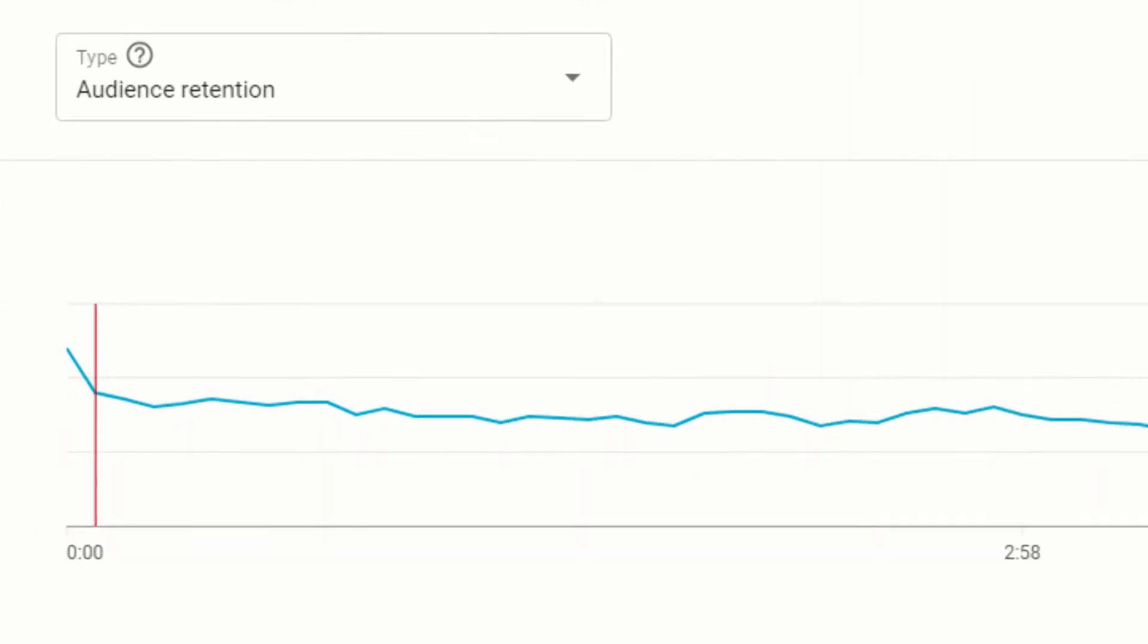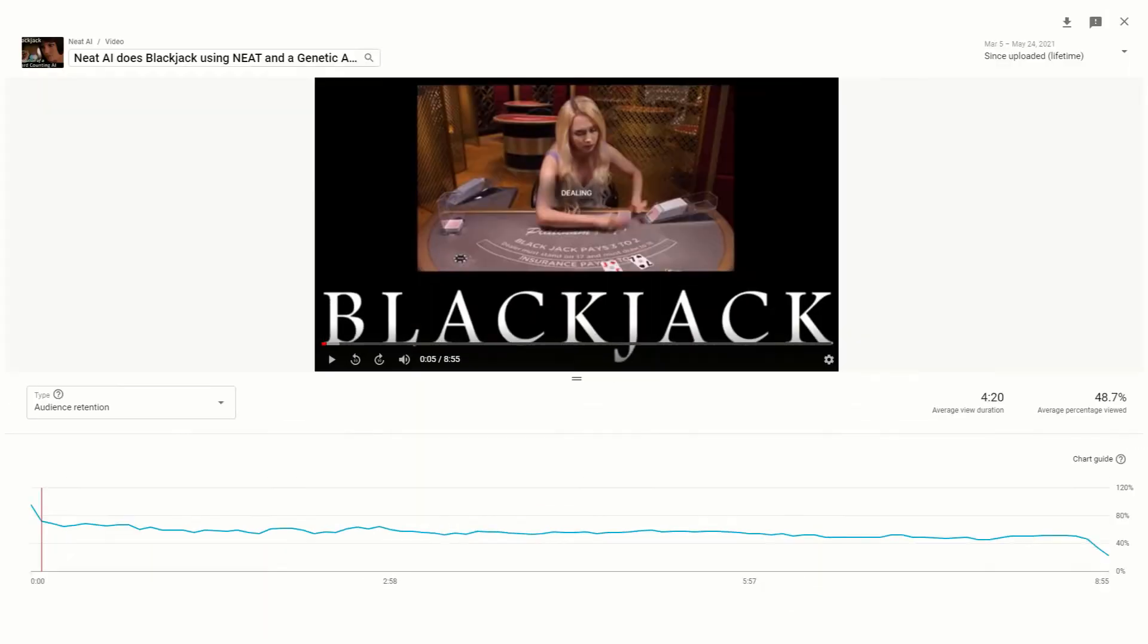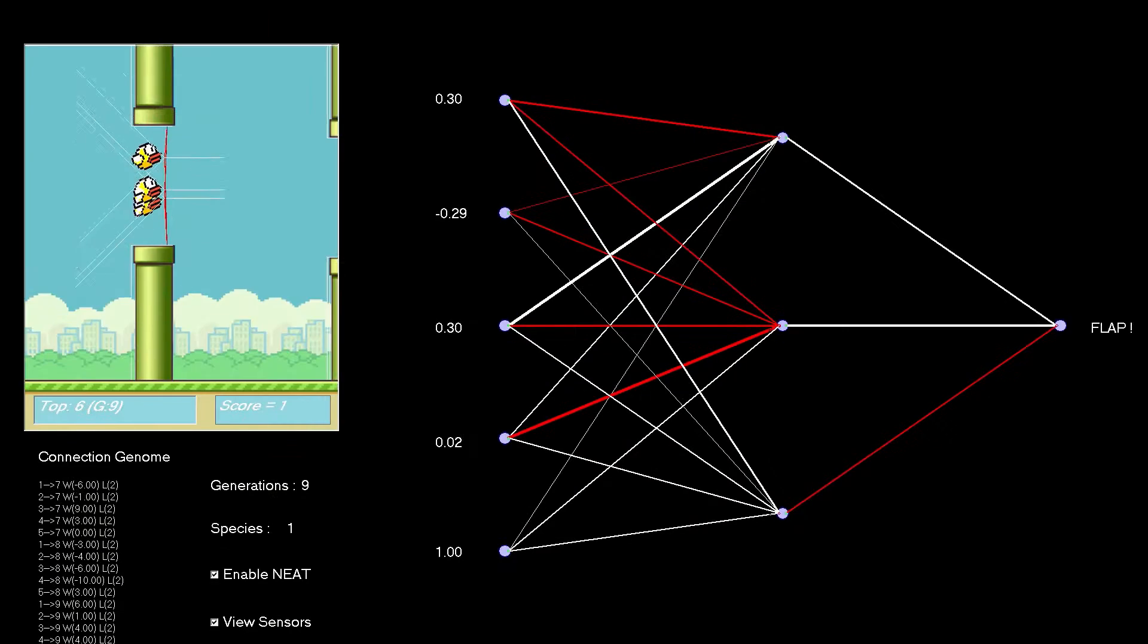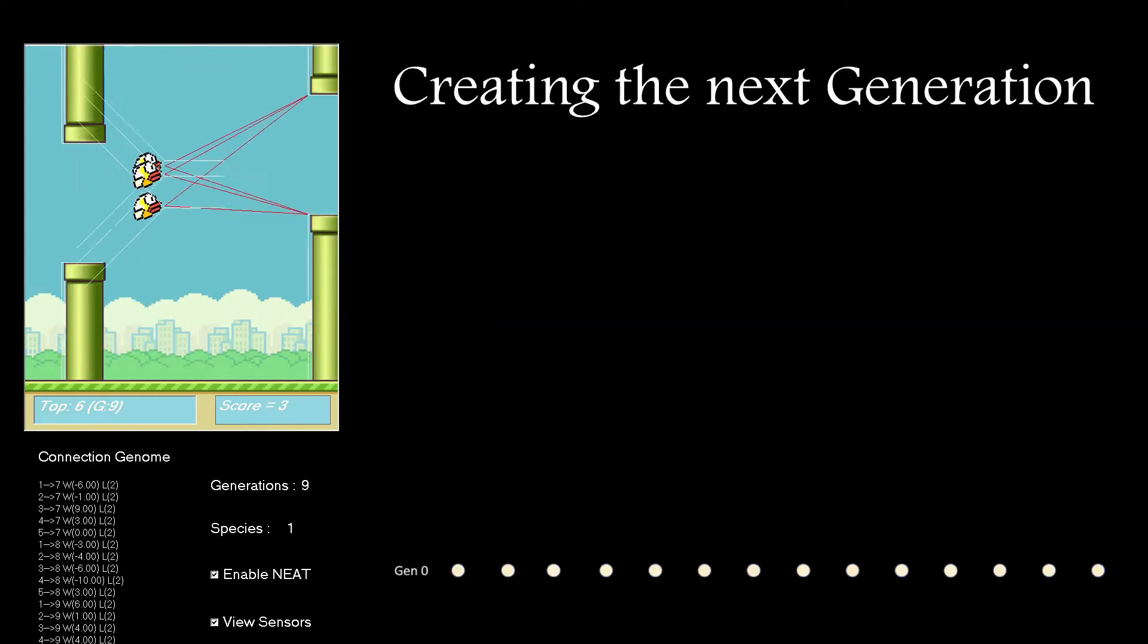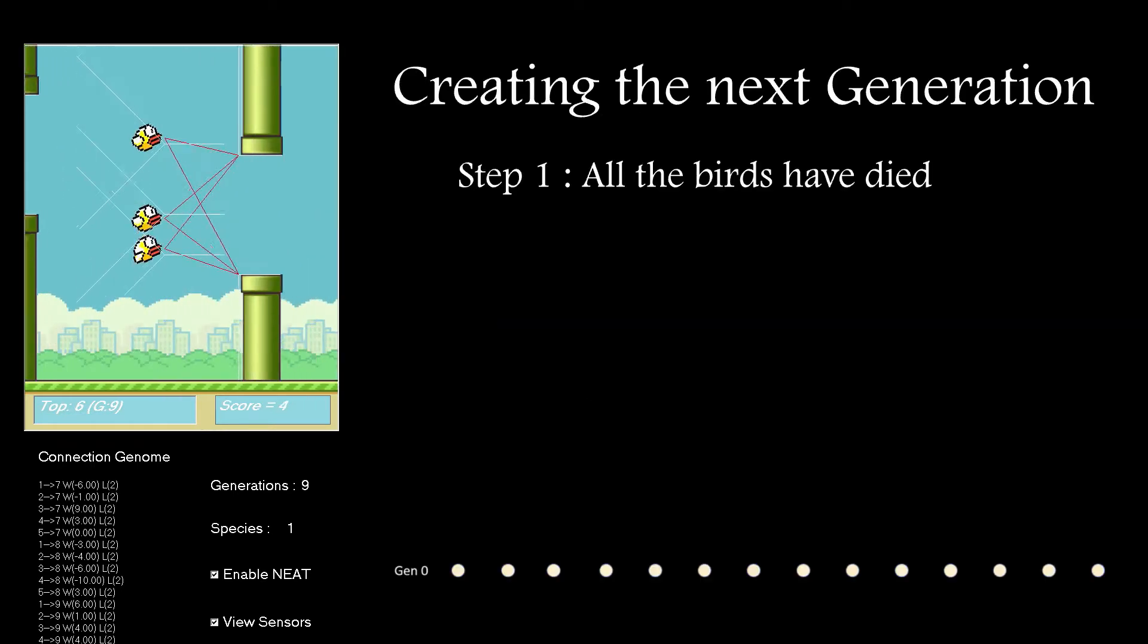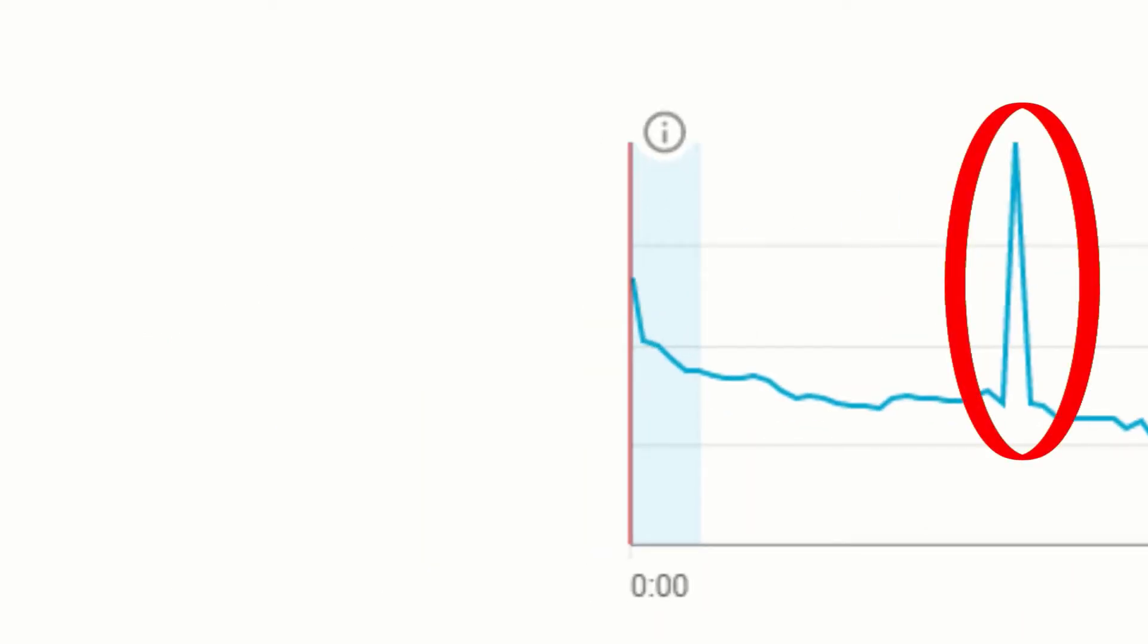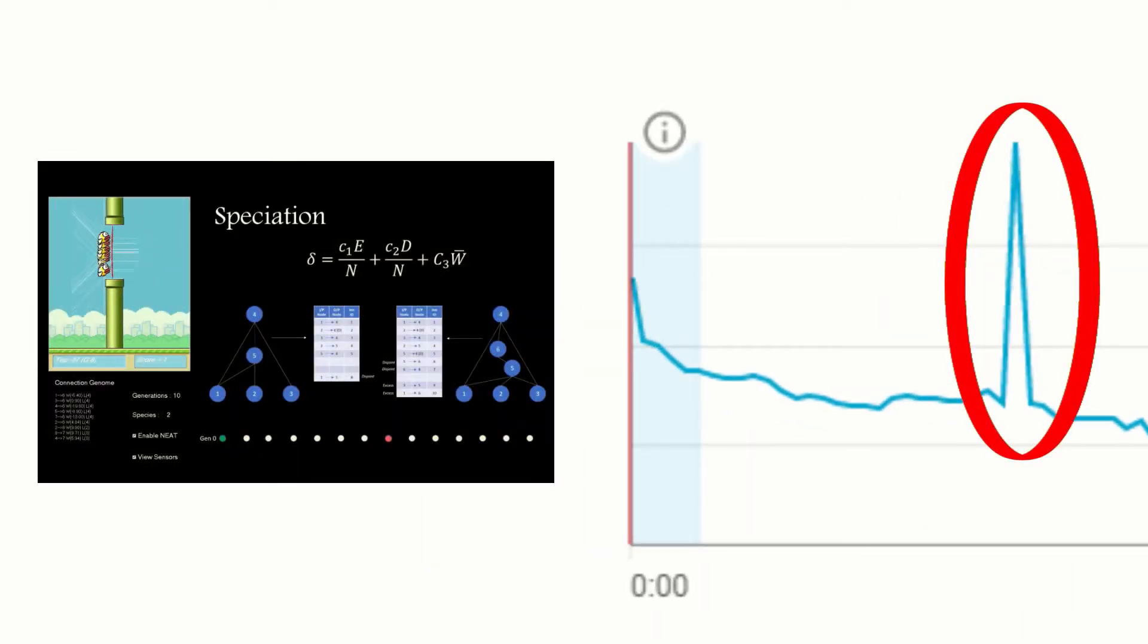The blackjack video is fairly typical with a fall-off at the start followed by a fairly flat section as people watch the video and then a fall-off towards the end. But there's something a little odd with the Flappy Birds video profile. If you look very closely, you just might be able to see a section where people are pausing the video, and it's this peak here.